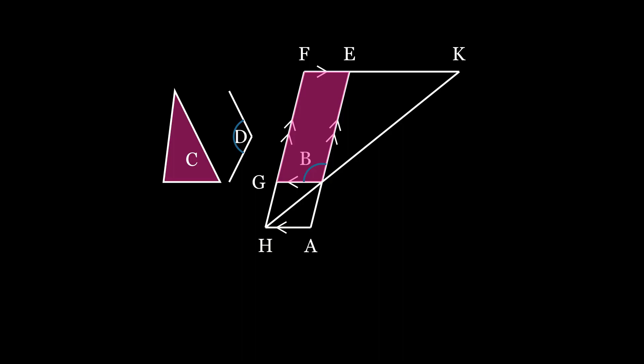We can then draw KL parallel to FH, and we can extend HA to L, and we can extend GB to M.